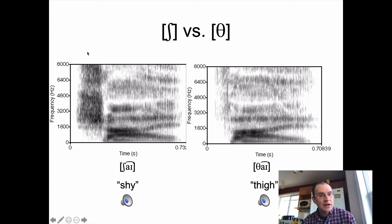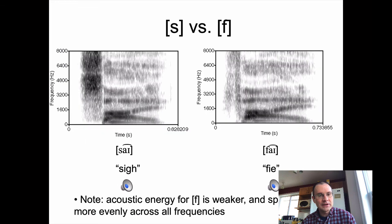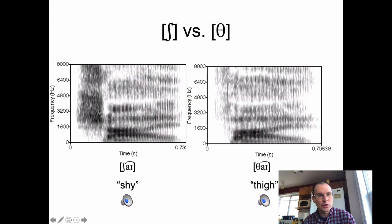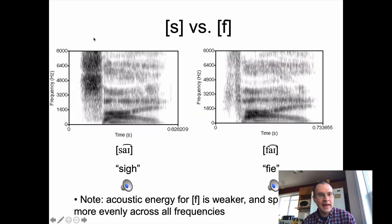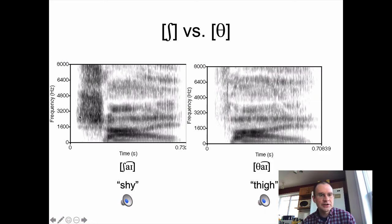Esch also looks like S, except there's one difference: Esch has more energy down towards the bottom of the frequency range. The cutoff between high-intensity and low-intensity frequencies for S is maybe around 3,500 hertz. For Esch, it's occurring at a much lower frequency — maybe around 2,000 hertz before we get into the weak stuff at the bottom. Why is that? Pause and think about it, and then we'll start up a new video.